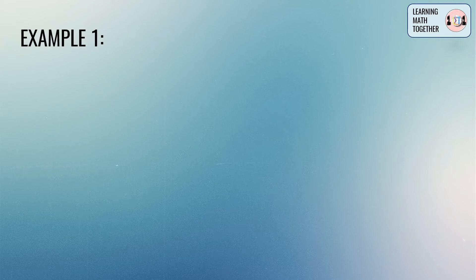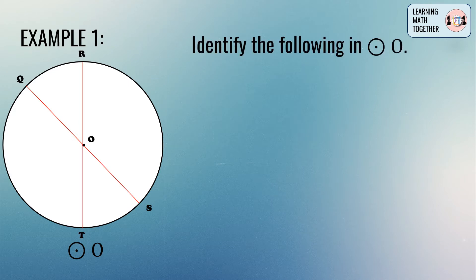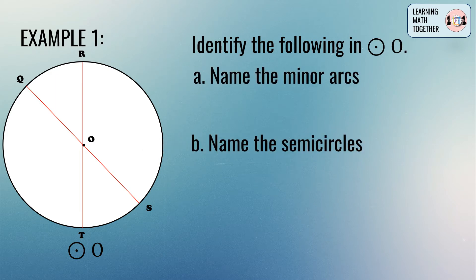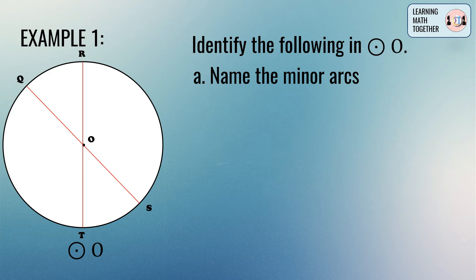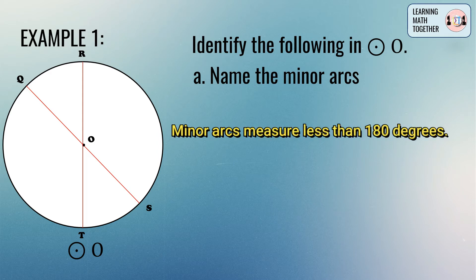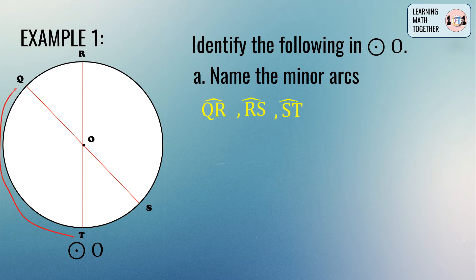Now let's have an example to further recognize the different types of arcs. We have here circle O, and we need to identify the minor arcs, semicircles, and major arcs that contain point R. Let's focus first on the minor arc — minor arcs have measurements less than 180 degrees.